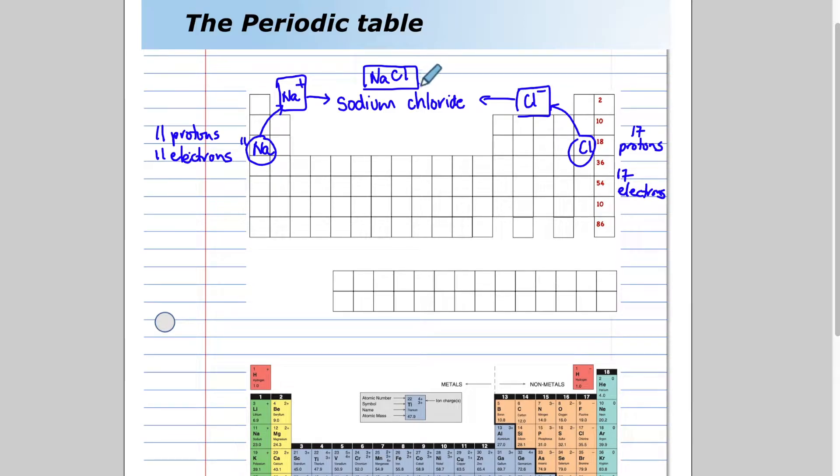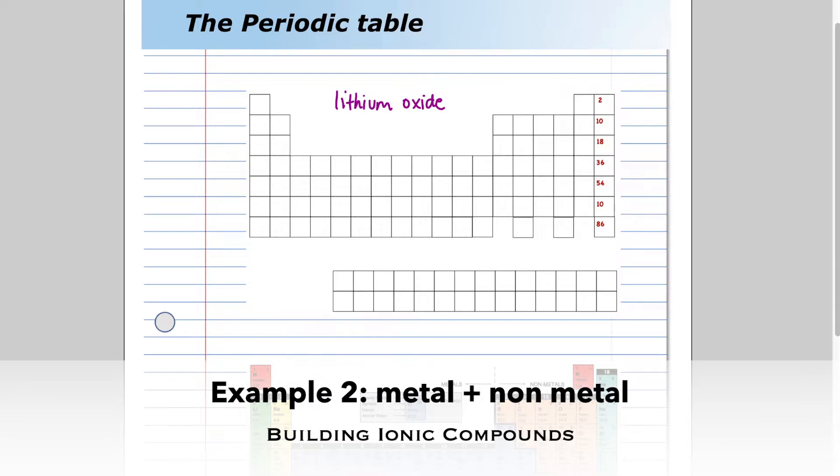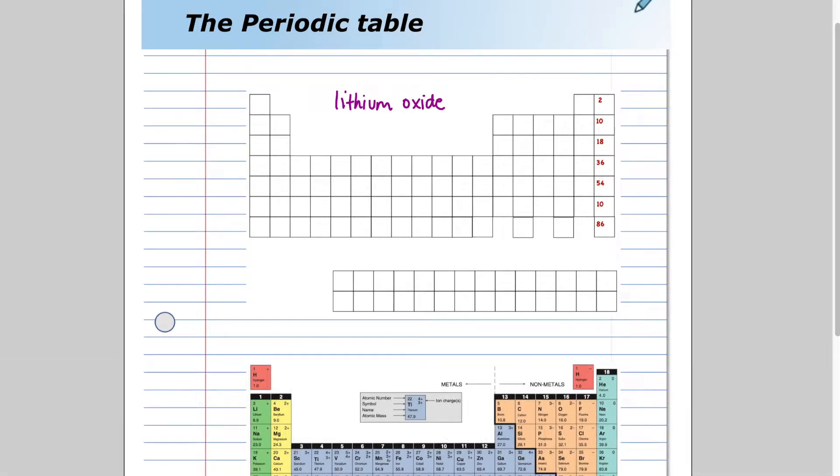How would we form lithium oxide? Well, first, we're going to have a look at where lithium is on the periodic table. Lithium exists right there with three protons and three electrons. As an element, lithium is neutral. However, lithium is a metal and will lose electrons. Lithium becomes an ion, a positive ion.